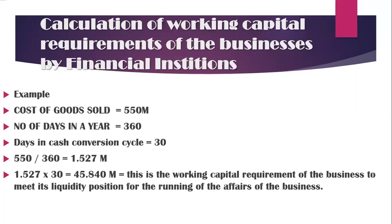What the banking industry will do is simply take the cost of goods sold, divide it by 360 days, and finally multiply that figure by the number of days in the cash conversion cycle. The amount that comes out is equivalent to 45 million, 840 thousand. This is the working capital amount that will be approved by the banking industry in favor of their customer for meeting their working capital needs in their business.